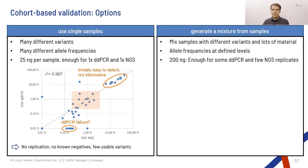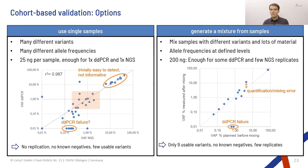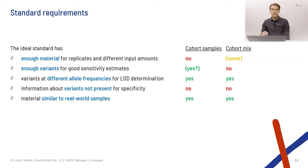Another option was to use a mixture of samples — picking samples with enough material and different variants, mixing them to get allele frequencies at defined levels. That allowed more material and even a few replicates. Checking the mixture, our planned allele frequencies mostly panned out, with a bit of quantification or mixing error, and ddPCR failed in some samples. However, we only had nine variants to look at, no known negatives to determine specificity, and very few replicates. So coming back to our requirements, we didn't have enough material, enough variants, and couldn't say anything about specificity.